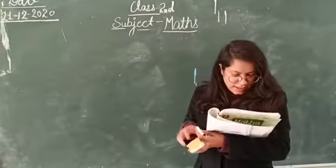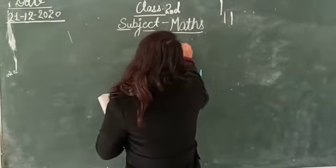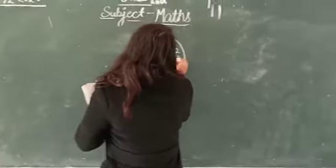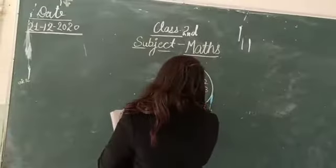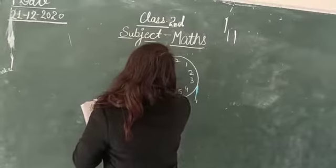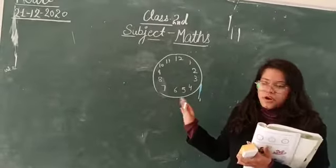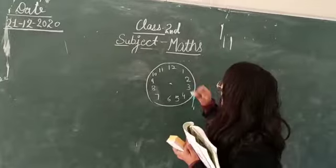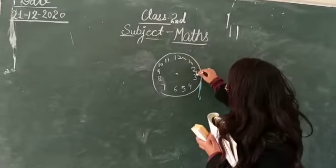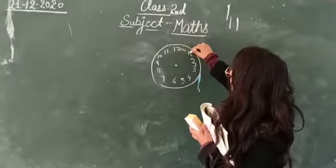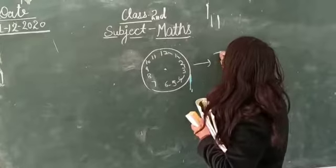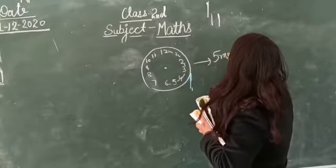Now we will see how we can read the time on the clock. This is our clock. Under each number — 12, 1, 2, 3, 4 — how many minutes are different? Five minutes. Between each number on the clock there are five minutes.